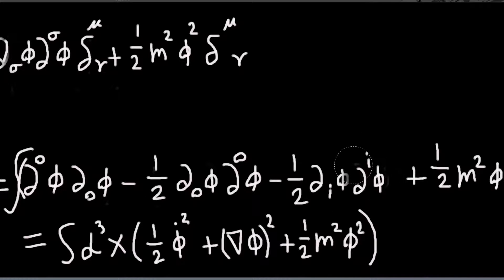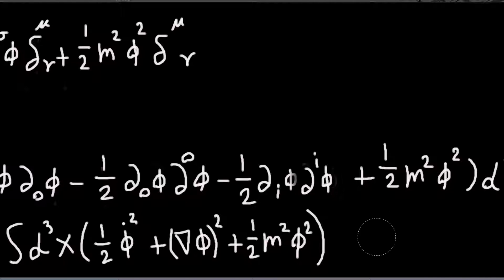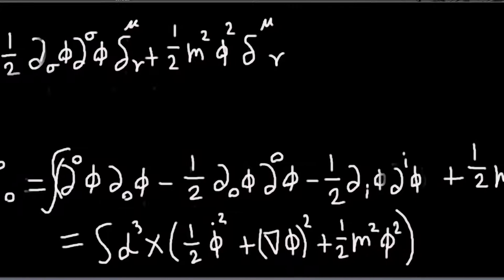And then d upper i phi is like minus gradient phi. So that, we can, if we write it like this. Then that minus sign will cancel this minus sign. So it becomes plus gradient phi squared. And then plus one half m squared phi squared.